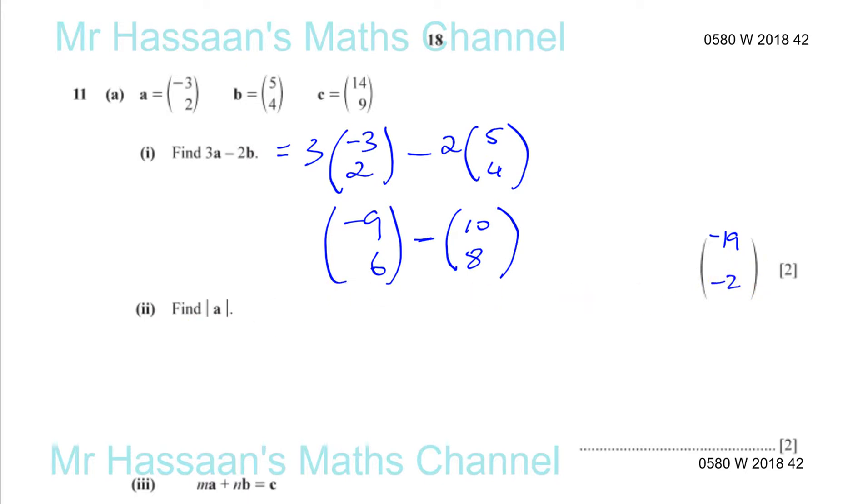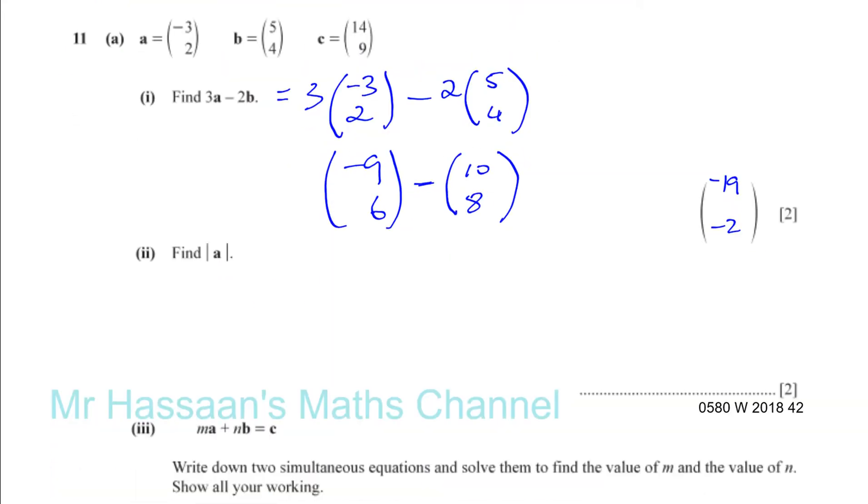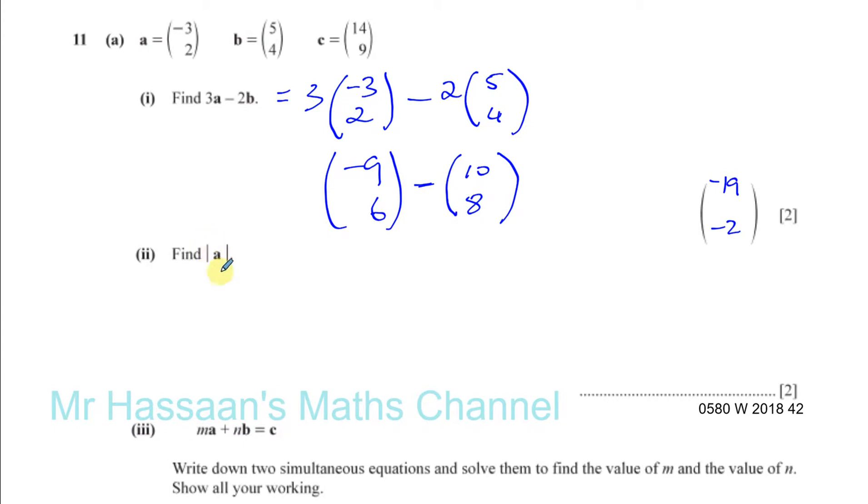Then it says find, and it's got this symbol here, these two lines. It means find the magnitude of a, the length of the vector, the line for vector a. Now if you think about it, let's say a starts down here. You've got to go 3 spaces to the left and 2 spaces up. So 1, 2, 3, and 1, 2. So vector a will have this kind of look to it.